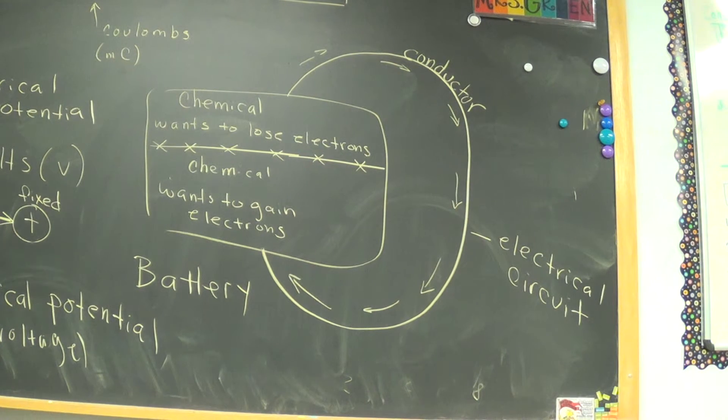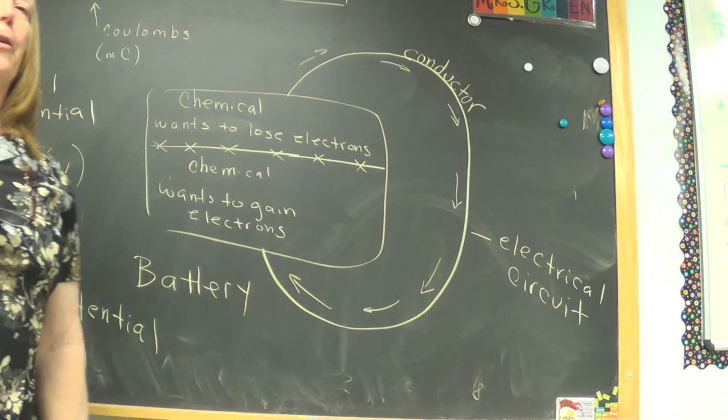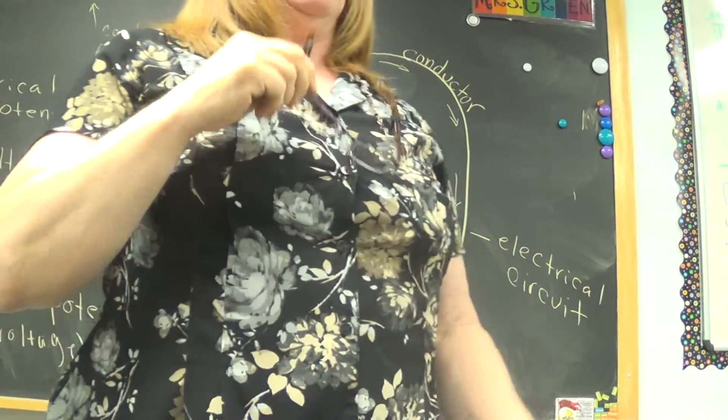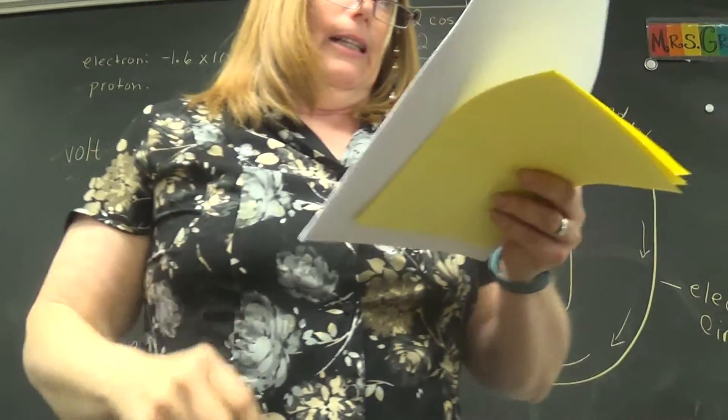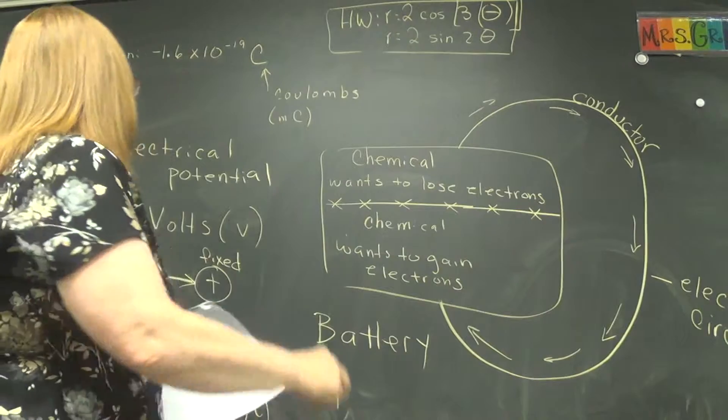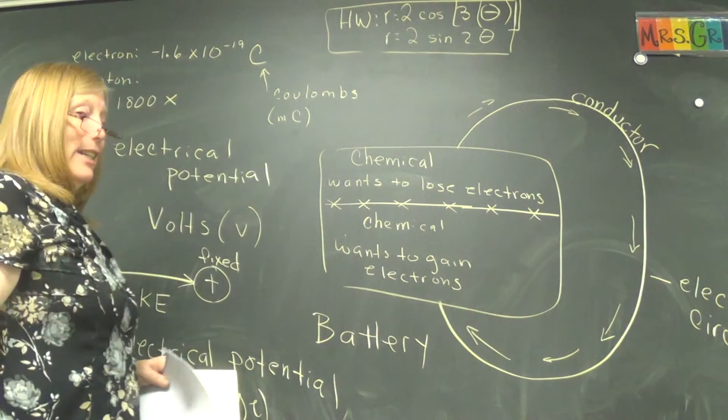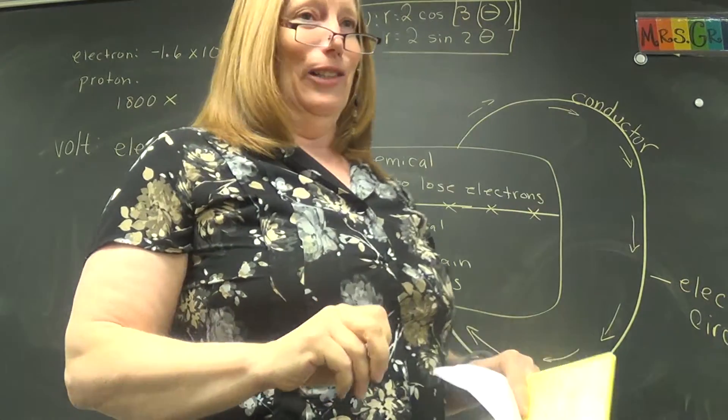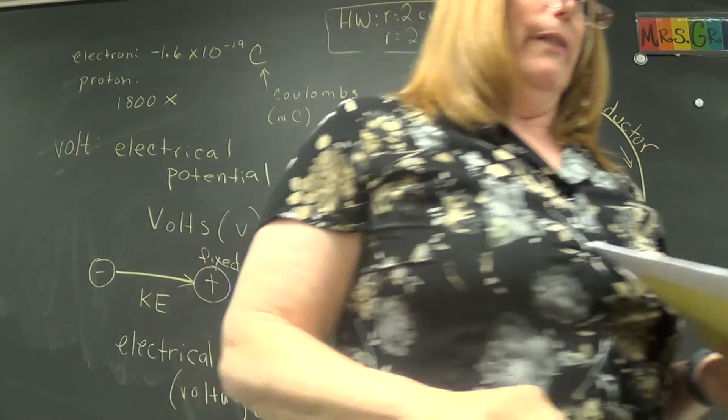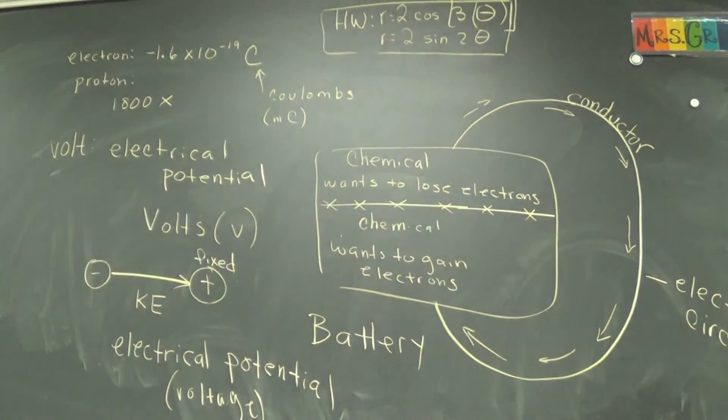All right. Now before I reveal to you the proton's charge, I want to tell you how much bigger a proton is than an electron. Do you see that spot there? The proton is 1,800 times bigger than an electron. 1,800 times bigger. So are you filling all this in? Let me see how